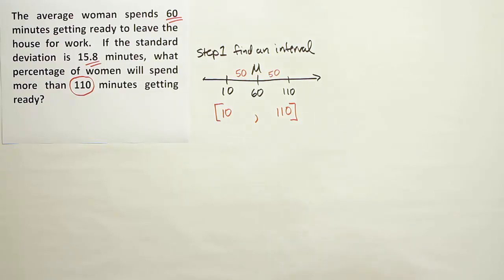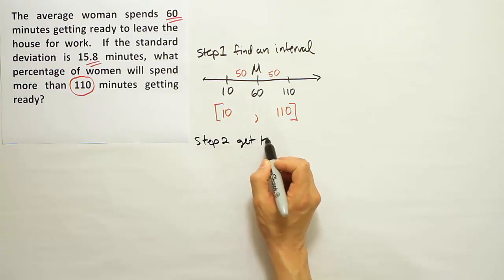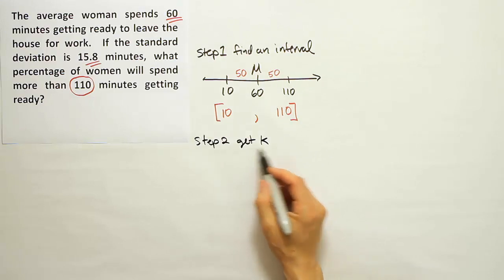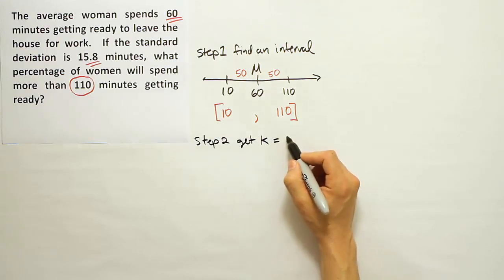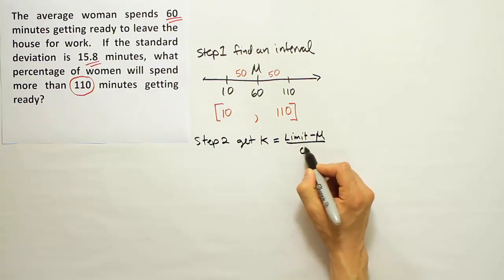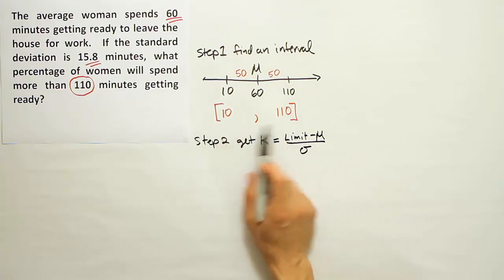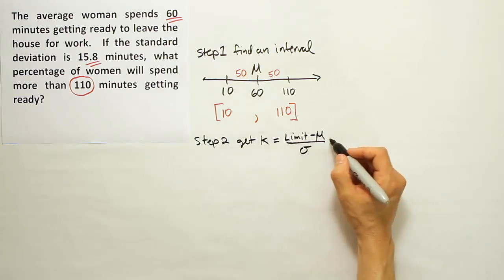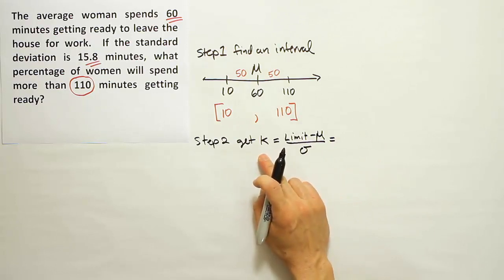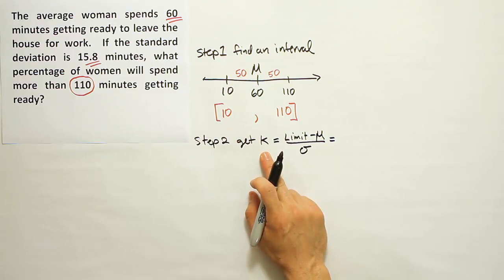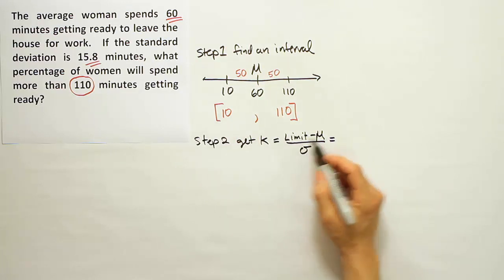The next step is to get K. Usually K is our first step, but here we didn't have an interval, so we had to find the interval before we could get K. K will be the limit minus mu over sigma. I'm using limit here to represent either one of these limits - it doesn't matter which one you choose. Usually we use the upper limit to make our K positive. If you use the bottom one, you'll get a negative K, but in the formula it's squared, so it'll turn out to be the right answer either way.